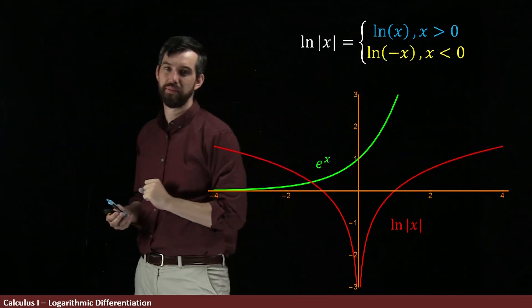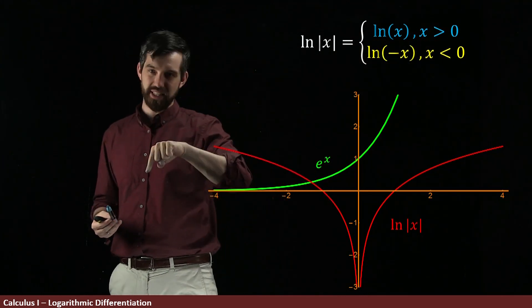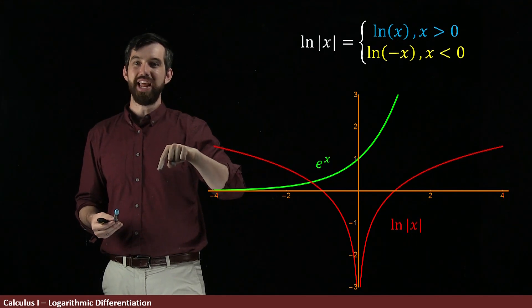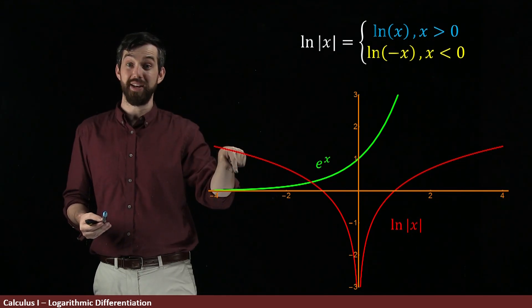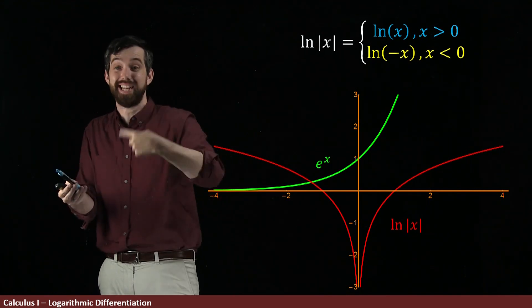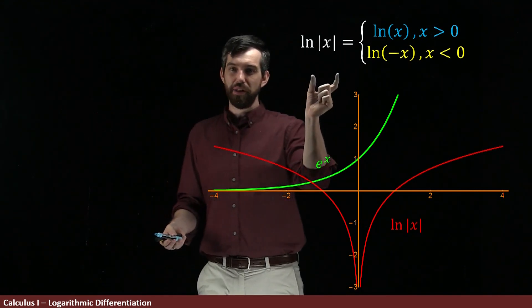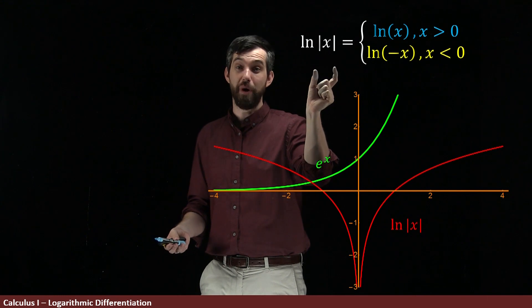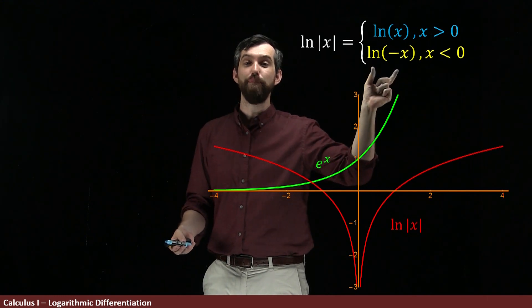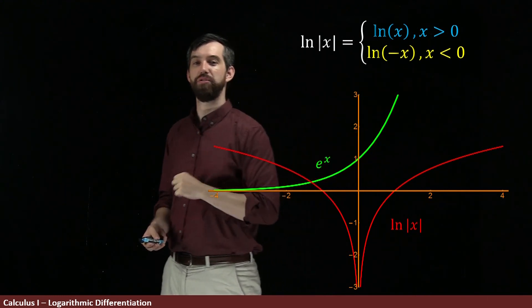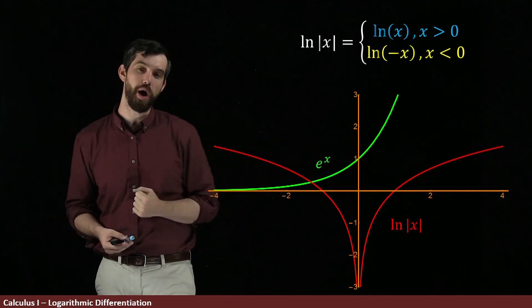When x is less than 0, then it takes a number like minus 1 to plus 1. It takes whatever the number was and it sticks another minus sign in front of it. In other words, the natural logarithm of absolute value x is the natural logarithm of minus x in the scenarios where x is a negative number like minus 1.